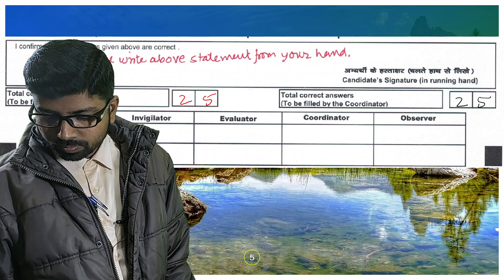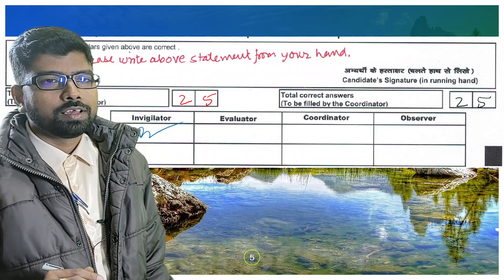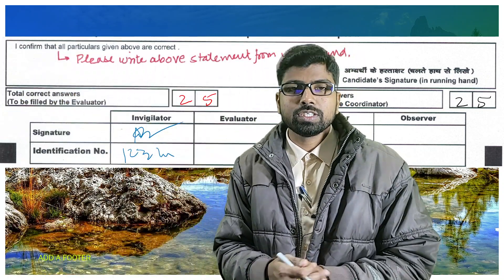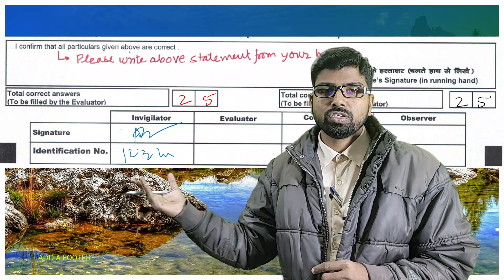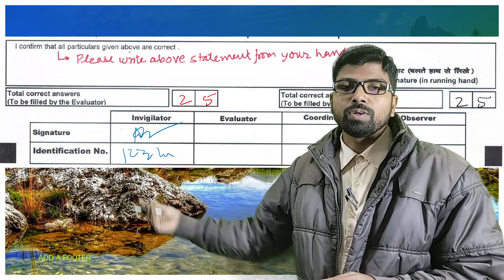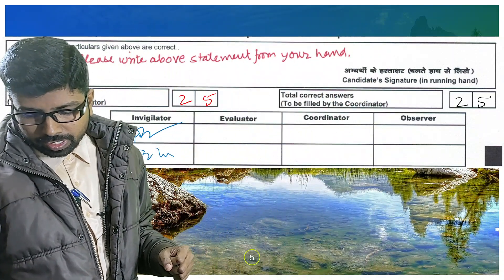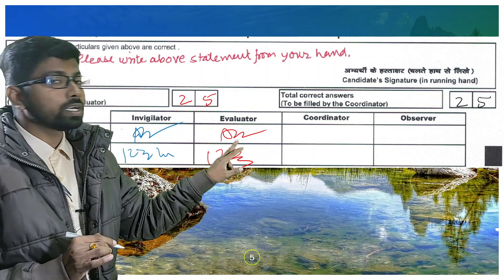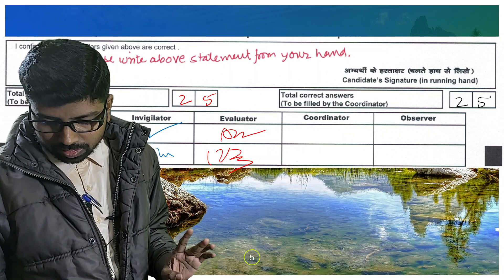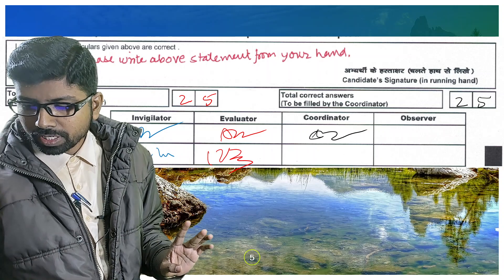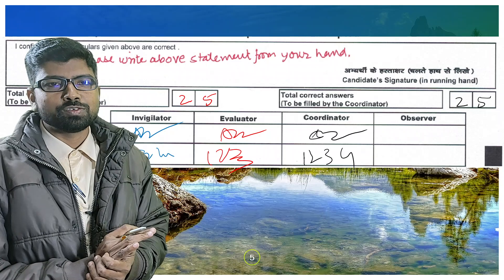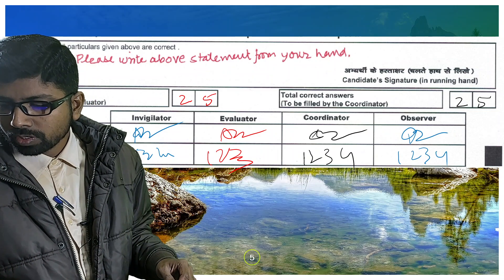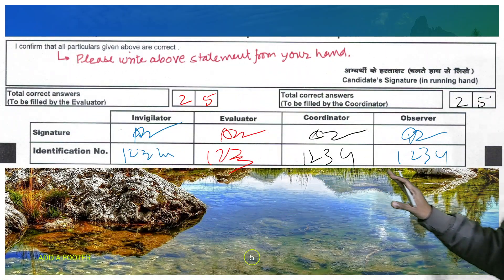To summarize the ink colors: the invigilator uses blue ink and signs with their identification number, which teachers receive during CBSE registration — the school provides this number. The evaluator signs in red ink with their identification number. The coordinator uses a distinct ink color, and the observer also signs with their identification number. This way each officer's contribution is clearly identifiable by the ink color used.